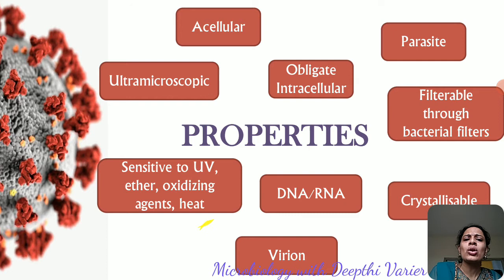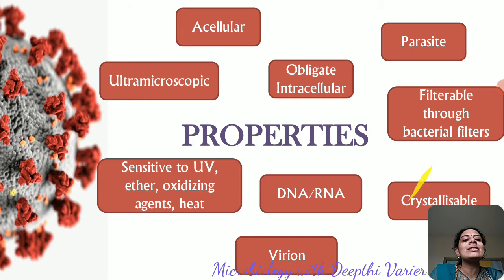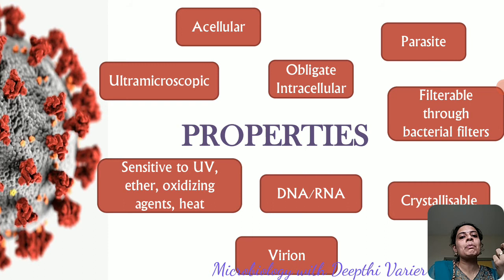Viruses are sensitive to many agents such as heat, UV radiation, ether, and oxidizing agents — especially enveloped viruses, which are very sensitive and can be rendered ineffective by these agents. Viruses are crystallizable, as demonstrated by Stanley, and they are filterable through bacterial filters, which cannot retain them. Viruses also have two phases: an extracellular phase known as the virion, which does not reproduce, and an intracellular phase within the cell, where the virus multiplies using the host cell machinery.